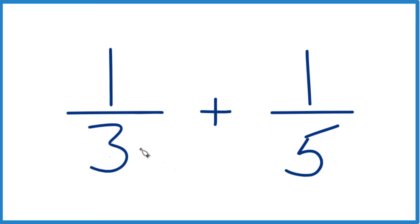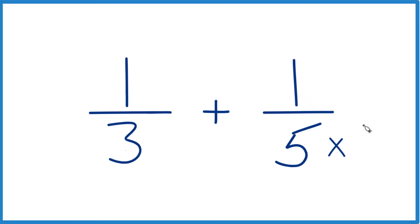So why don't we do this? We could take three times five, so three times five here and five times three over here. So that way we'd have 15 here and 15 here.